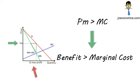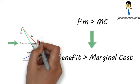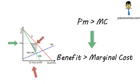Also, by restricting output to QM to maximize the firm's profit, there is a deadweight loss to society equivalent to the shaded area. Hence, allocative inefficiency exists.